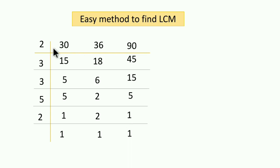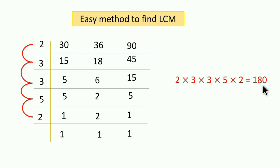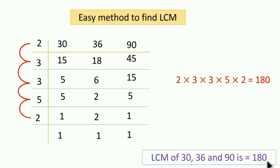अब यह जो left side के numbers हैं यह इसके multiples हैं: 2, 3, 3, 5, 2। इन multiples की multiplication: 2×3×3×5×2 = 180। LCM of 30, 36, and 90 is 180। अगली वीडियो में हम देखेंगे LCM के examples।